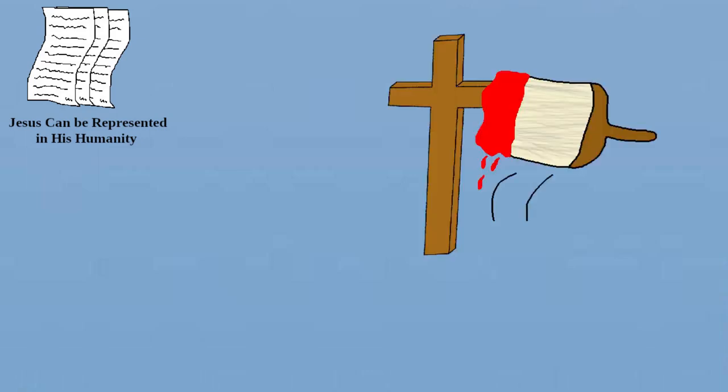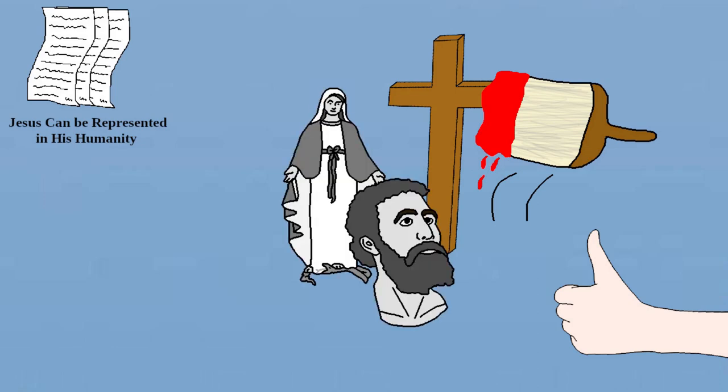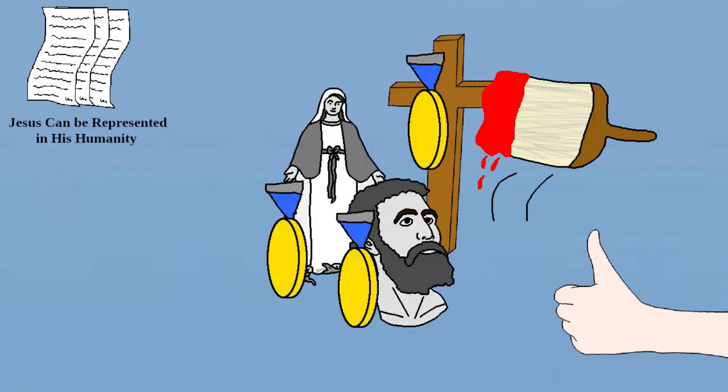The anathemas established that Jesus could be represented in his humanity, that artistic representation of scenes from the gospels should be accepted, that representations of Jesus and the saints should be revered, and that the traditions of the church, both written and otherwise, should never be rejected.